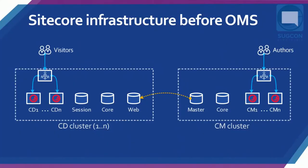Let's rewind and look at the infrastructure of Sitecore before OMS. This is still classic and still relevant today — as far as I can tell, this is how it's been since Sitecore 5 or even earlier. You had a content management cluster where you would have a master database and a core database. If you needed to, you could have several content management servers. You can have multiple content delivery clusters, each of them having multiple content delivery servers, its own session state, its own web database. Data is published from master to web.